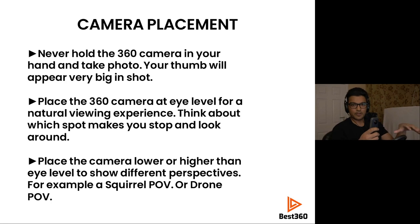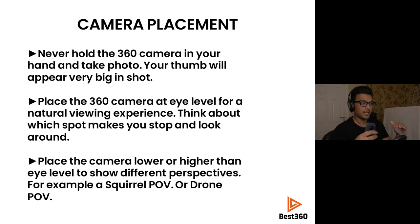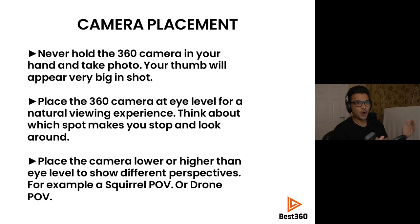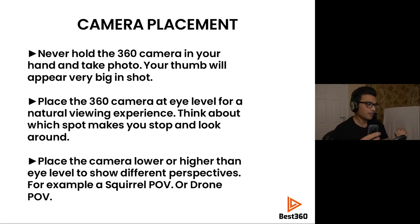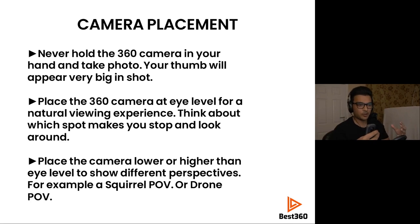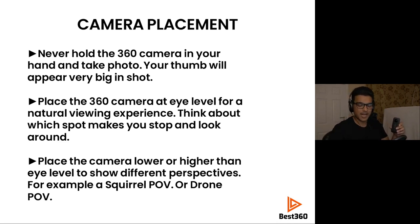When you upload your photo onto social media, you want people to have a natural view and experience, as if they are there themselves. To do this, you want the camera to be at eye level — generally about 150 to 180 centimeters. You can also use different heights to create different perspectives: if you're trying to show an animal's point of view like a squirrel, mount the camera on the ground; or mount it on a drone for a very high perspective.